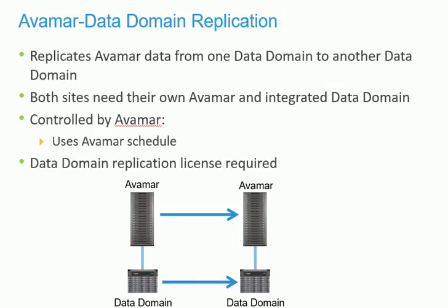Replication control belongs to Avamar. However, a Data Domain replication license is required to enable copying data from one system to another. Replication is a direct copy and occurs on the Avamar replication schedule, so there is nothing additional to configure on the Data Domain side — we just need to enable the Data Domain replication license to transport data between Data Domain systems.